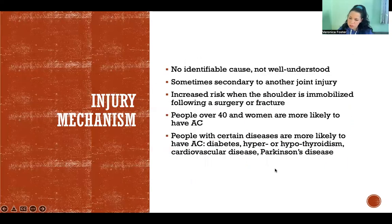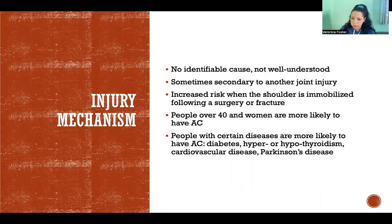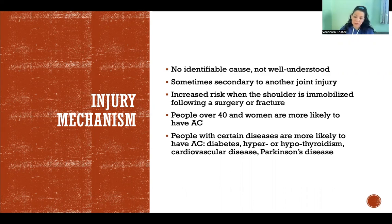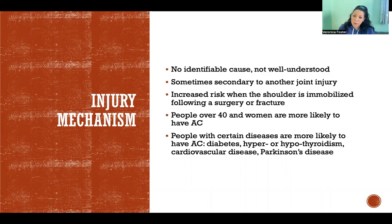Regarding injury mechanism: we don't really understand this condition. There's no identifiable cause — no clear cause and effect. It does sometimes occur secondary to another joint injury, because when a joint is immobilized, that increases the risk. For example, if somebody has a rotator cuff tear and needs surgery, the shoulder must be immobilized afterward, putting that person at higher risk of adhesive capsulitis. Some people have those surgeries and don't develop it, and others do — it's very unpredictable.